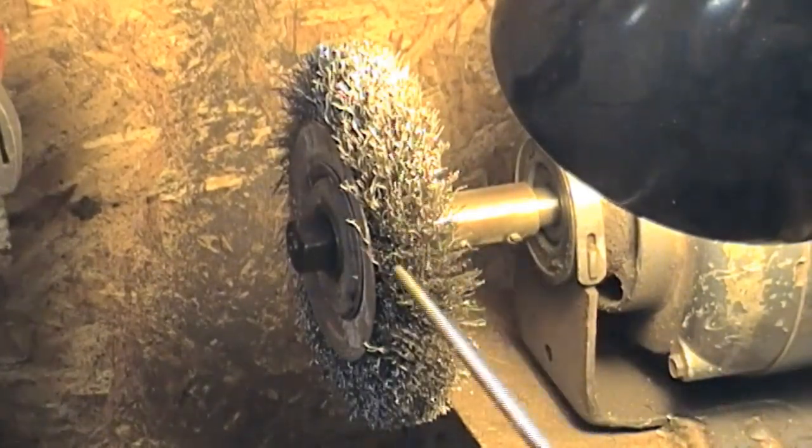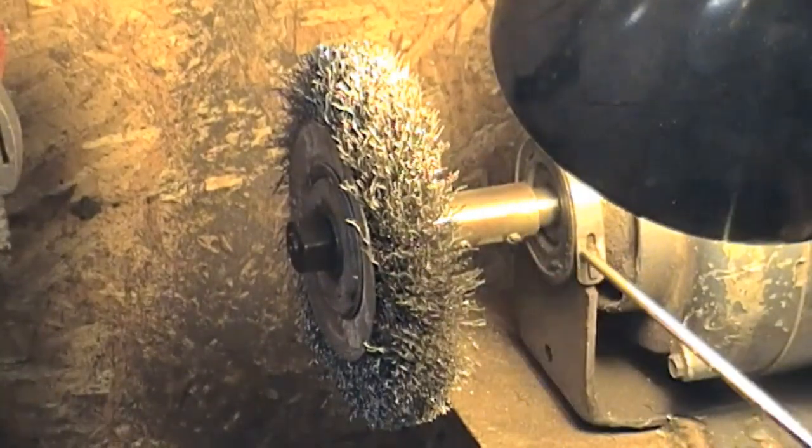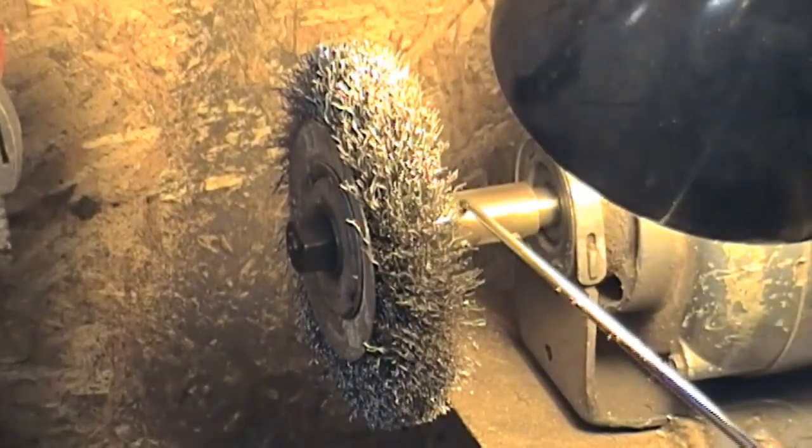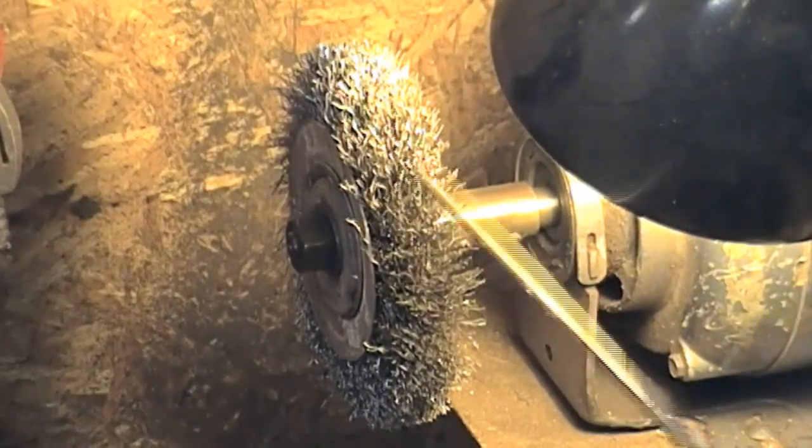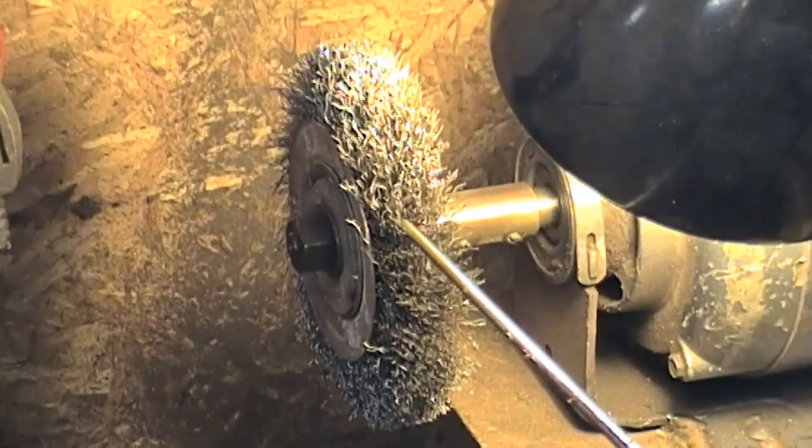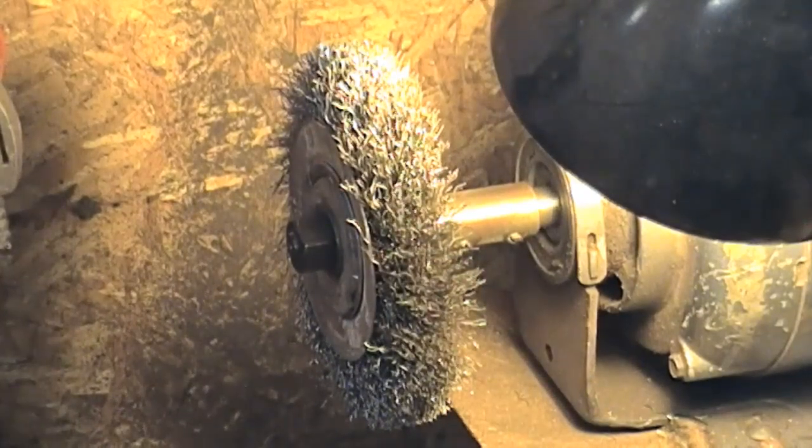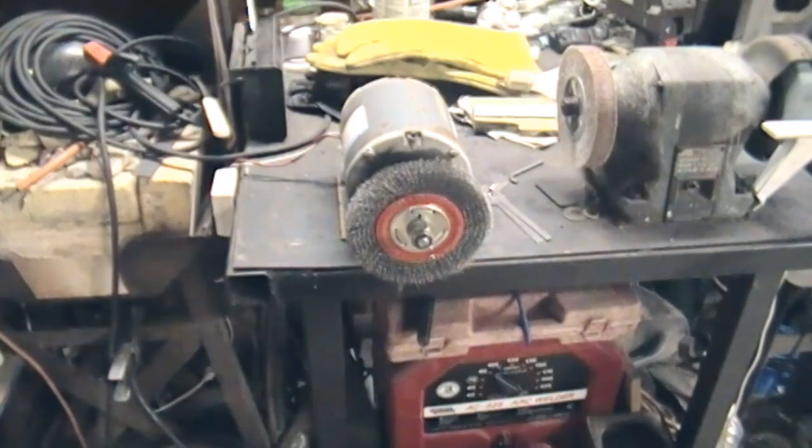Now this is a very old wire wheel, it goes back a hell of a long way, it's getting quite worn. It's an old quarter horse motor, homemade arbor, and this is fairly soft steel actually. It doesn't make too much of a mess of parts when you're getting rust off.